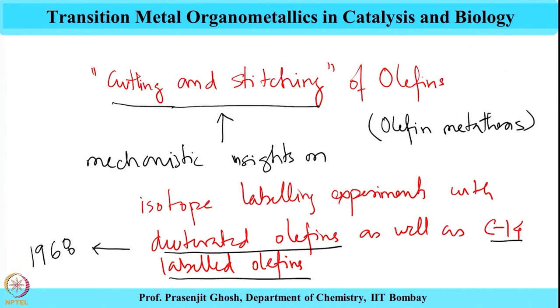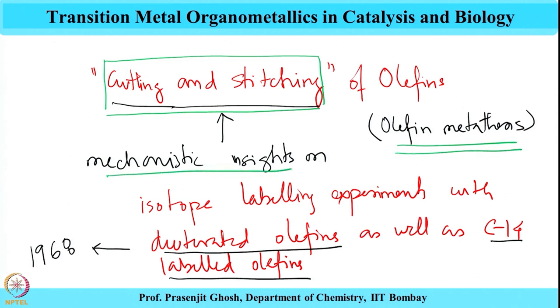Once the cutting and stitching mechanism of olefin metathesis had been established, the focus shifted on obtaining mechanistic insight of this reaction. Today, what we are going to take up is the various mechanistic hypotheses which were at that time thought to be the main pathway for performing this olefin metathesis reaction. The first mechanistic hypothesis was proposed by researchers at Goodyear Tires in their 1968 JACS publication.